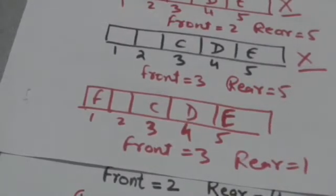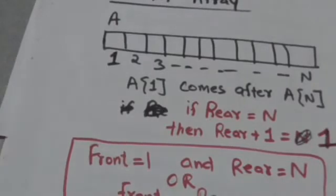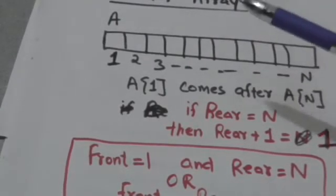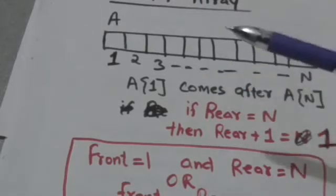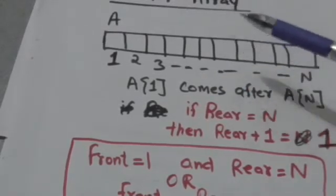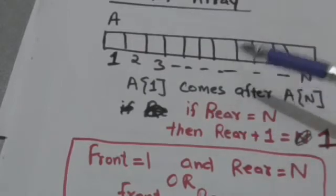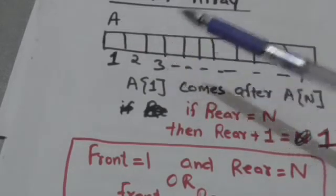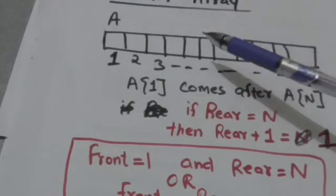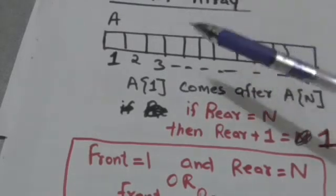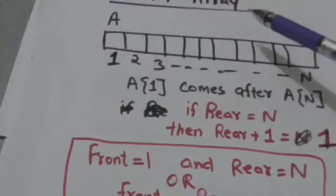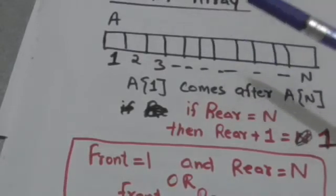Now suppose there is a queue A which can hold only n elements, and queue A is maintained in memory by a circular array A. The lower bound of array A is 1, and variable front contains the index of the element of array A which is the front element of queue A.